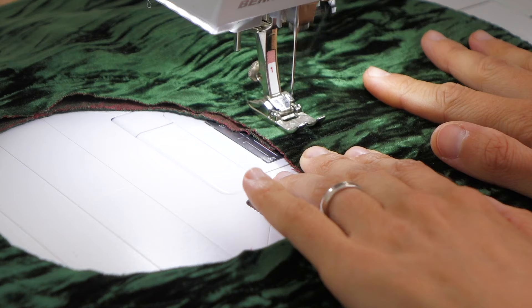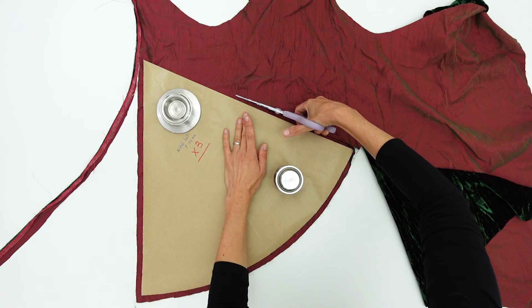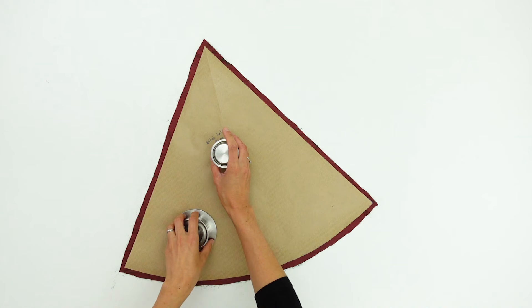And since we are on the subject, it is time to prepare the top part of our hat. We need to cut out the second pattern piece without forgetting to add 1cm all around for the sewing allowance.